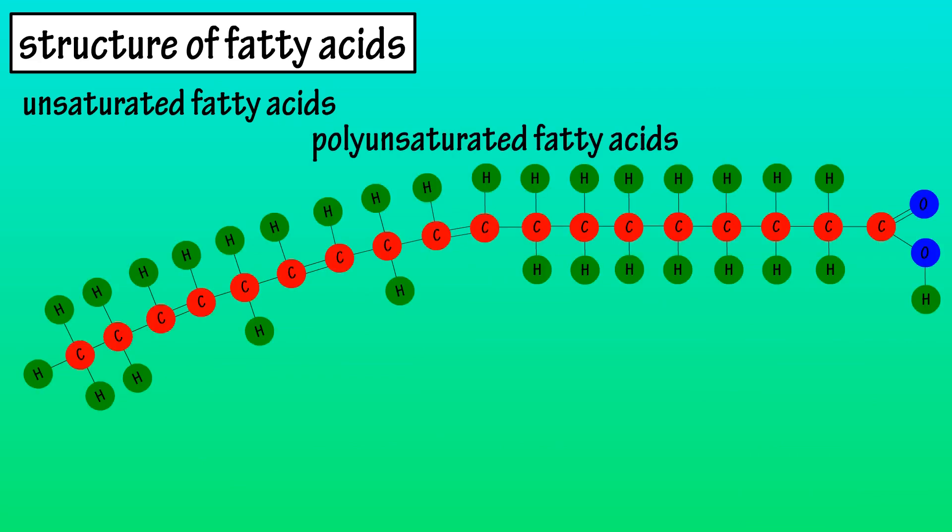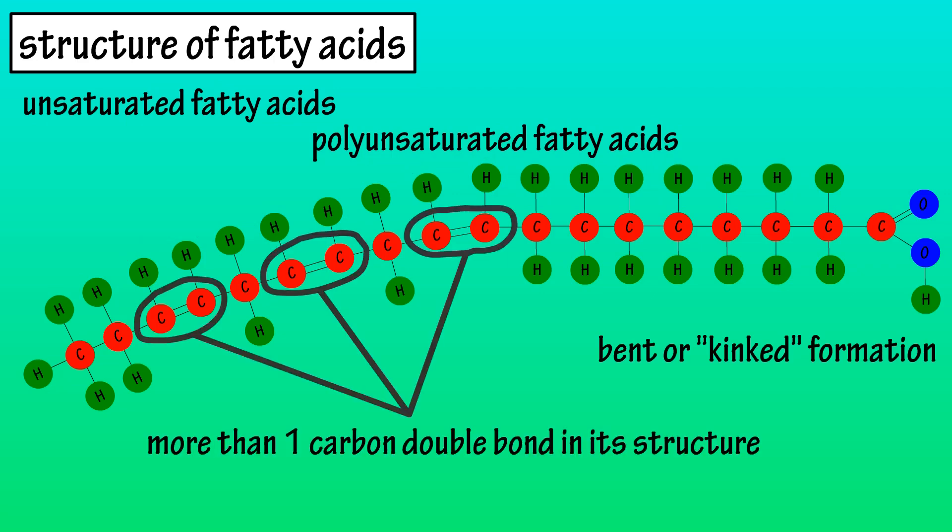Polyunsaturated fatty acids also have a cis molecular formation. Again, the hydrogen atoms are on the same side of the double bonded carbon atoms, also giving it a kinked formation. Polyunsaturated fats have more than one unsaturated carbon double bond in their molecule. They are typically liquid at room temperature but start to turn solid when chilled.